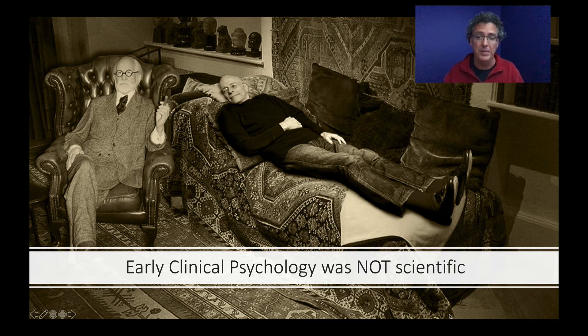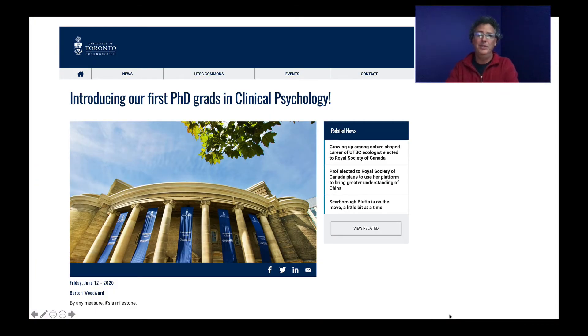Now fast forward to the present, June 2020, this summer just a few months ago. The University of Toronto graduates its first graduates in clinical psychology. When the University of Toronto officially opened its psychology department in the early 1900s, they did not include a clinical psychology program. Students could not learn clinical psychology at the University of Toronto. Why? Because the University of Toronto considered psychology a science, but it didn't consider clinical psychology a science, and so it wasn't going to include it in what it taught.